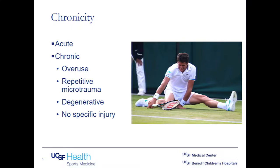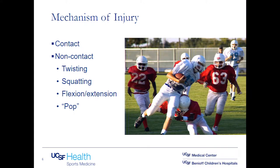Chronicity is usually grouped into two types: either an acute injury, which can happen in sports or athletics, or a chronic injury, which is probably more common in the primary care model. Most chronic cases are due to overuse injuries or repetitive microtrauma to the hip, as well as degenerative injuries. A lot of patients come in and say it just started hurting a few months ago — there was never a specific injury. Mechanism is usually either contact or non-contact, and more commonly non-contact.